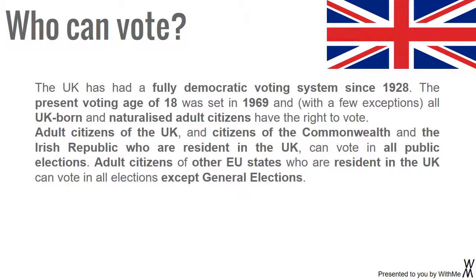The UK has had a fully democratic voting system since 1928. The present voting age of 18 was set in 1969, and with a few exceptions, all UK-born and naturalised adult citizens have the right to vote. Adult citizens of the UK, and citizens of the Commonwealth and the Irish Republic, who are resident in the UK, can vote in all public elections.